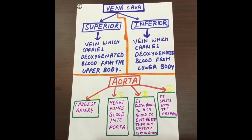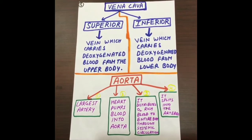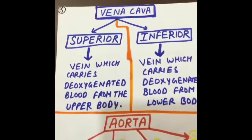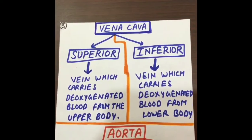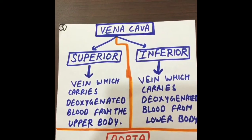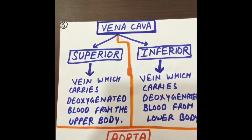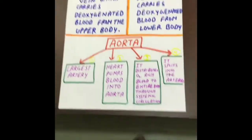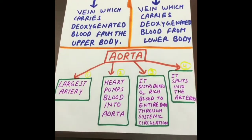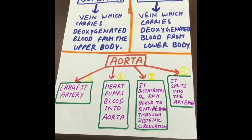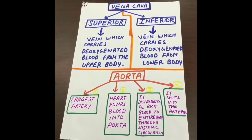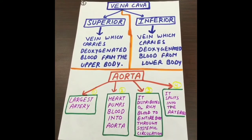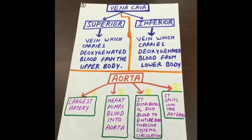You must have come across the words vena cava and aorta. Let us learn what they are. Vena cava is a vein. There are two types: superior and inferior. The vein which carries deoxygenated blood from the upper body is called superior vena cava, and the vein which carries deoxygenated blood from the lower body is called inferior vena cava. Aorta is the largest artery, and the heart pumps blood into the aorta. It distributes oxygen-rich blood into the entire body through systemic circulation, splitting into two arteries which divide further.